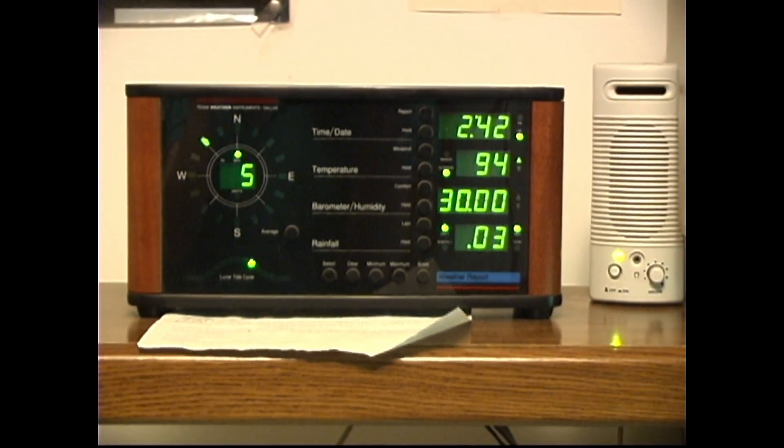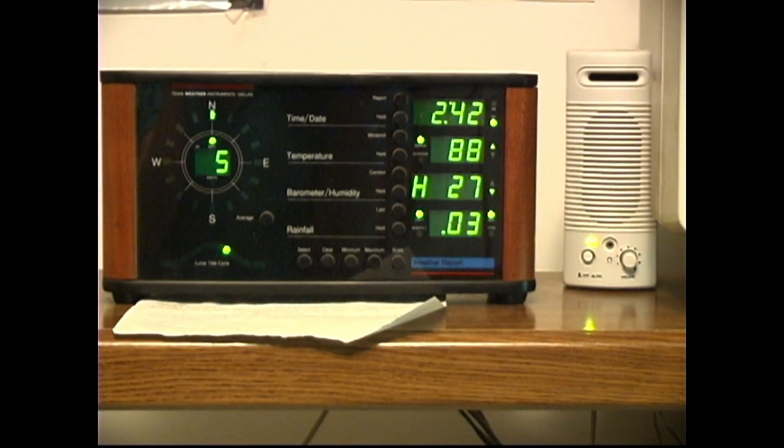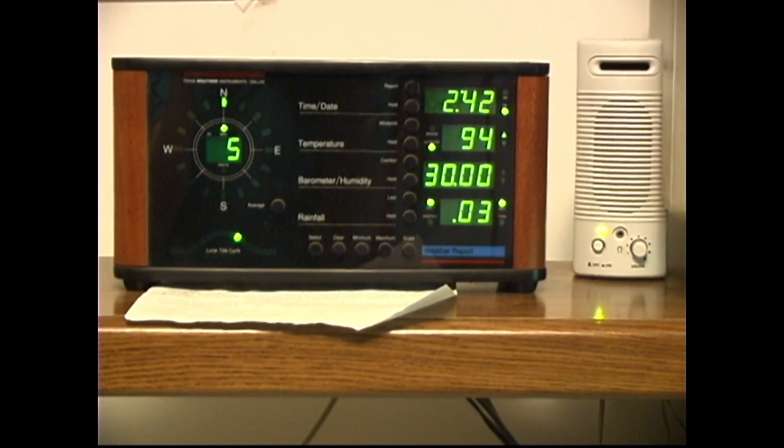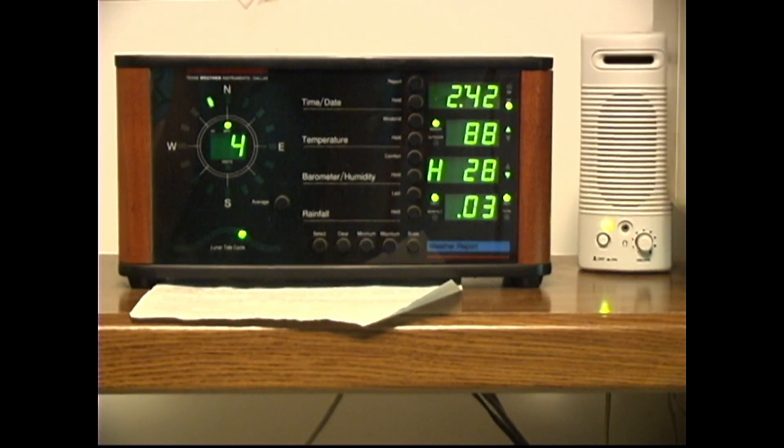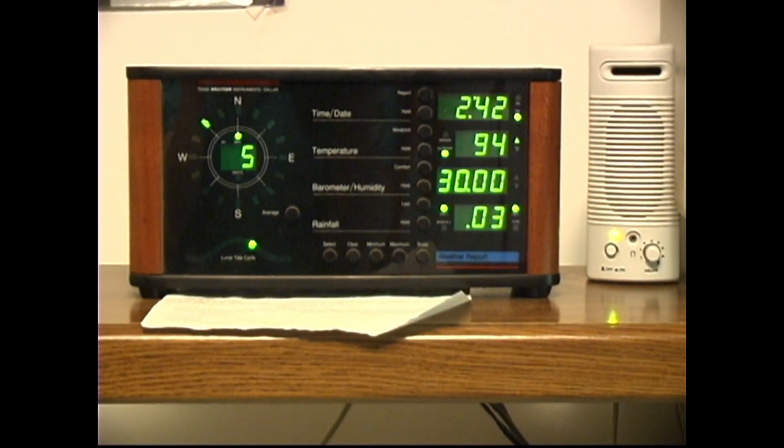We got wind speed and direction. We got the time, the outdoor temperature and the indoor temperature. No, I don't have central air. The barometric pressure, 30.00, and the humidity is 28%. We had three hundredths of an inch of rainfall last night.